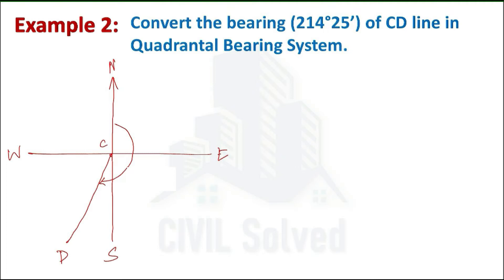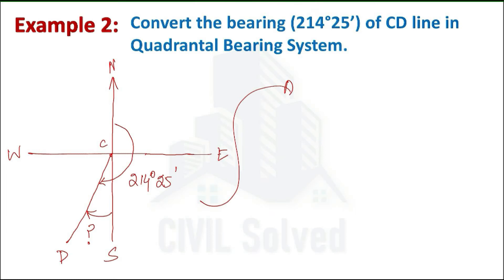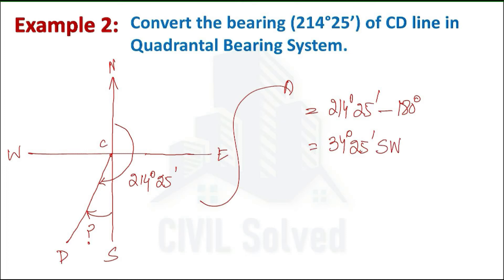The angle from north to the line is 214 degrees 25 minutes. In the quadrantal bearing system, the angle is measured from north or south, whichever is nearer. Here south is nearer, so the angle is measured from south. From north to south is 180 degrees, so subtracting 180 from 214 degrees 25 minutes gives 34 degrees 25 minutes. Since the line lies in the southwest quadrant, the final answer is S 34° 25' W.